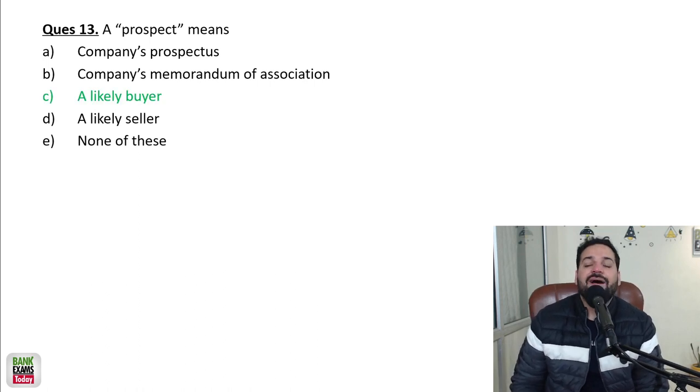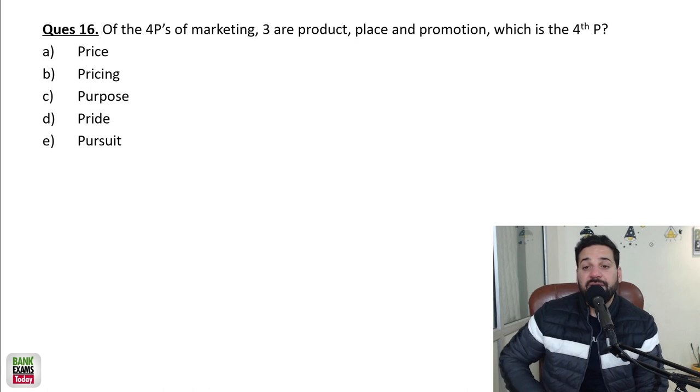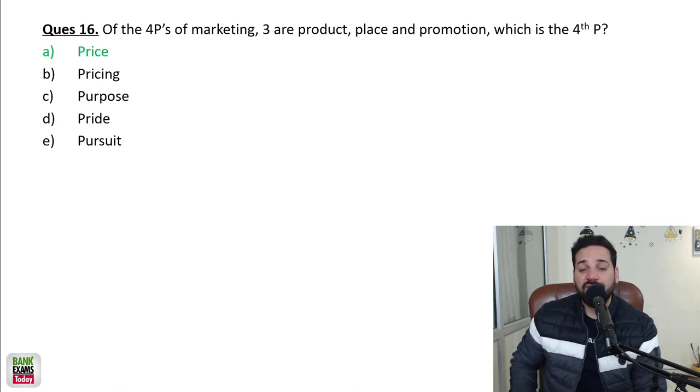Four P's - out of four P's, one is product, place, and promotion, and the fourth one is price. Price is the fourth P of marketing.